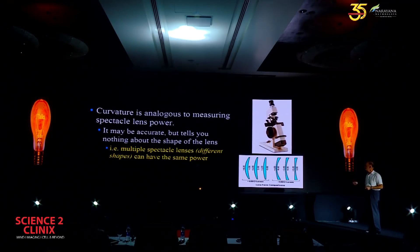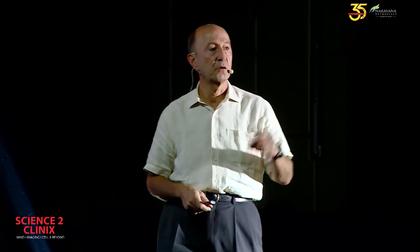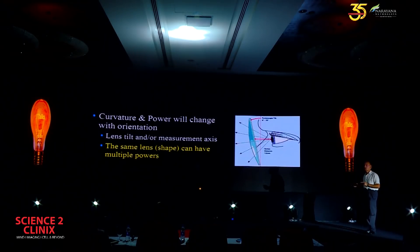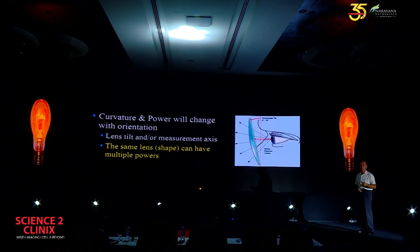More importantly, the same shape can have multiple powers. Those of us with astigmatic glasses know that if we tilt them, we change the power of the lens. So multiple shapes can have the same power, but the same shape, depending on orientation, can also have different powers.